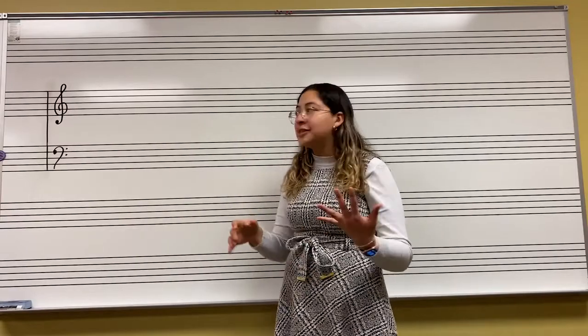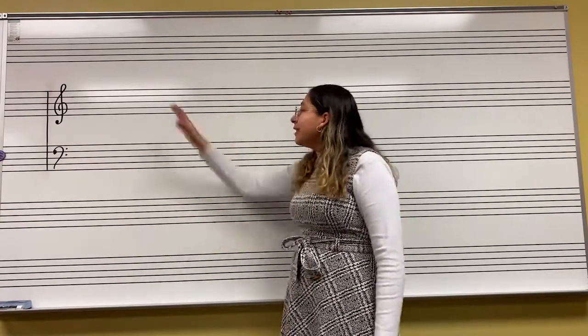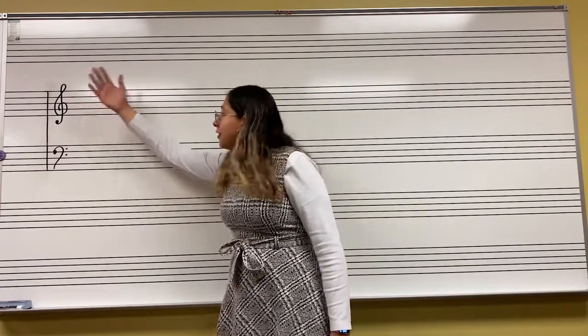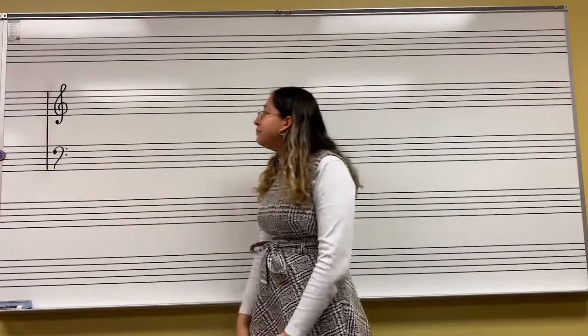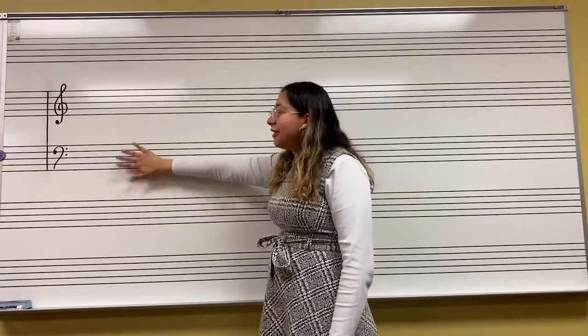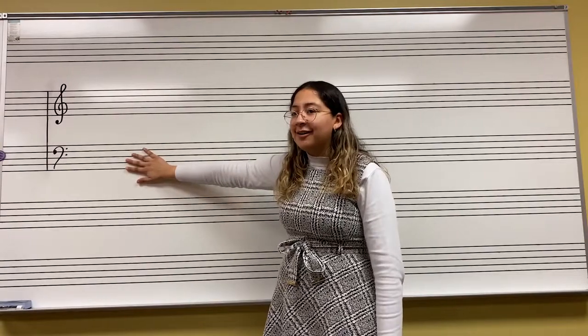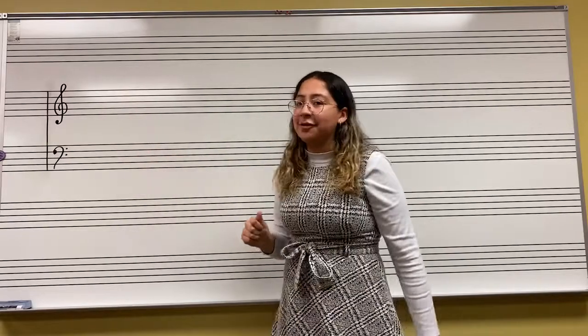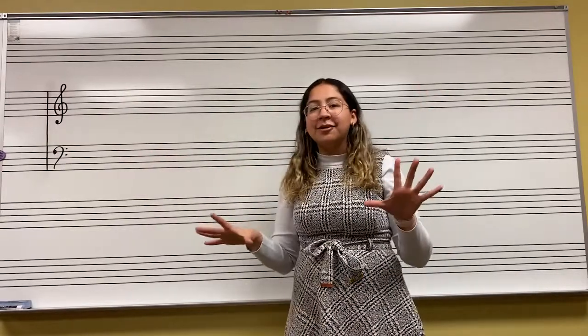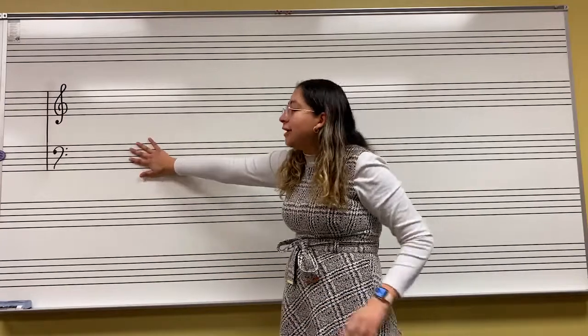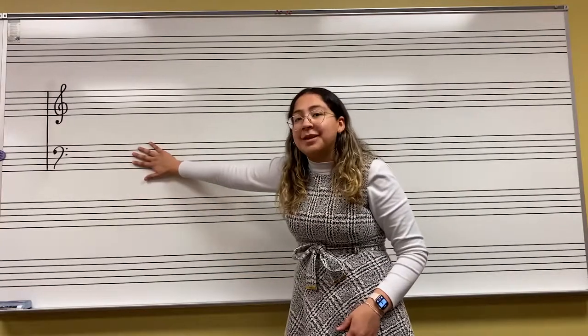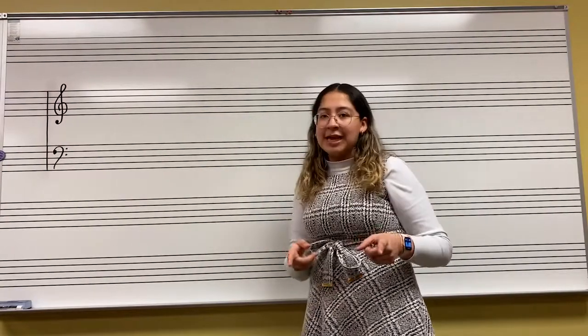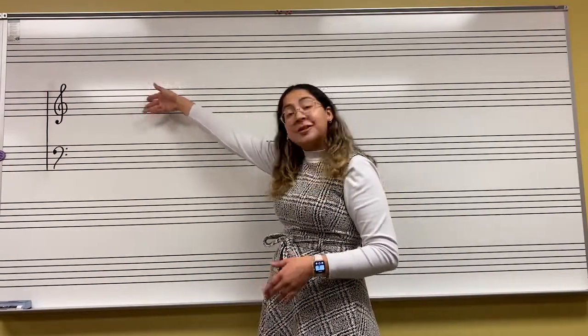Within these we have two different clefs: the treble clef, or the G clef, and the bass clef, or the F clef. Visually, it's easy to tell which one plays higher. The treble clef plays higher and the bass clef plays lower. So if we're thinking in terms of piano, your left hand is going to be playing the bass clef and your right hand is going to be playing the treble clef. Just like Anna was saying, there's five lines and four spaces on the staff.